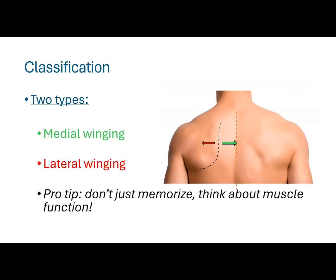We can describe this as being medial or lateral winging — medial shown in green, lateral shown in red. As a tip, try not to memorize definitions. Try to think about what muscles pull the scapula in what direction and, with injury to the muscle or nerve, what winging we'll get.